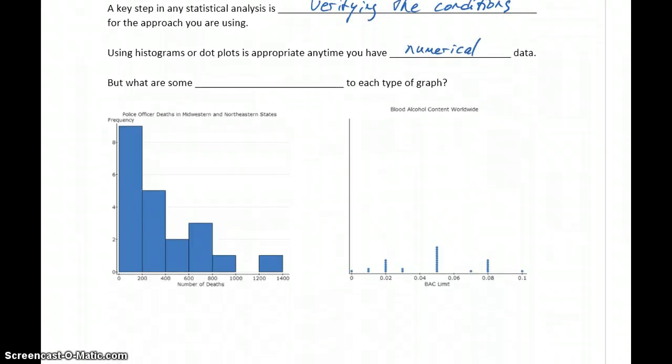But in some cases, a histogram or a dot plot might be a better choice than the other or a worse choice. So let's talk about a few of the drawbacks for each of these types of graphs.